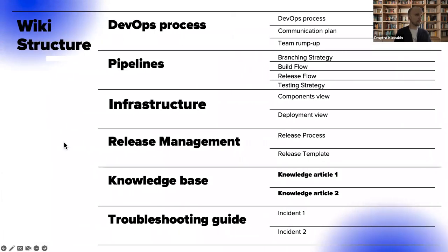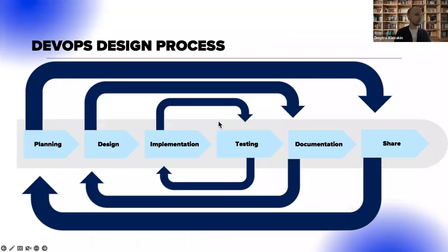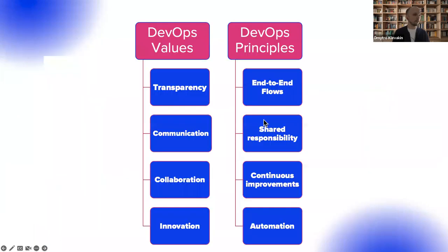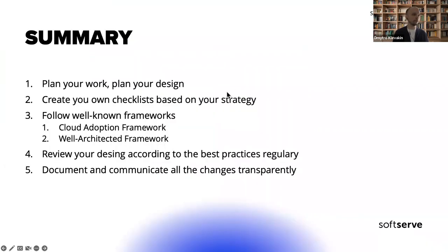It's a standard I like to reuse on all my projects. Going deeper, when we have all of this and collect it all together, we run through the longer cycle: plan the work, design it, implement it, test it, document it, and share it — then go back to planning again. Finally, doing all of this we can achieve the most important DevOps value: transparency.